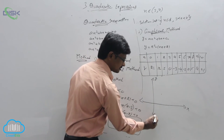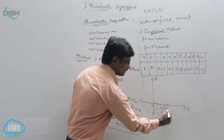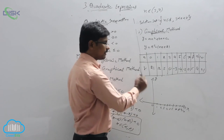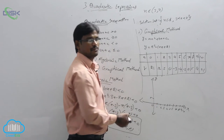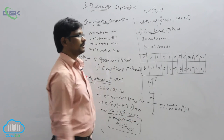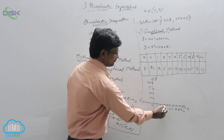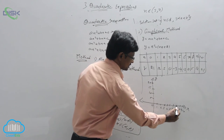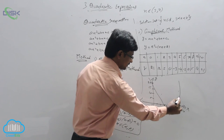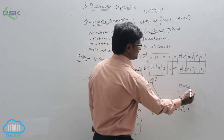Now draw the graph. Mark the x-axis and y-axis, and plot x values on the x-axis: 1, 2, 3, 4, 5, 6, 7, 8, 9, 10. On the y-axis, take each unit as 5, so mark 5, 10, 15, 20. Plot these values. The points at x equals 3 and x equals 7 lie on the x-axis. If you join all the values, you will get the parabola shape. This is the graph of x² minus 10x plus 21.